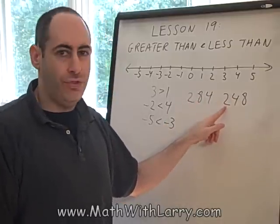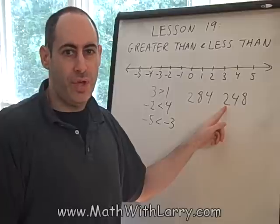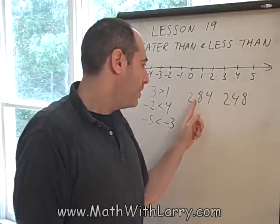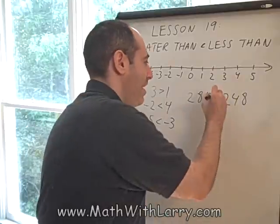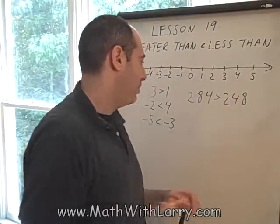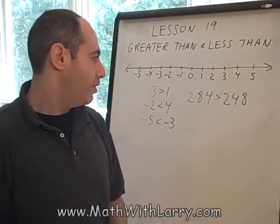Since they both started with a 2, they both had 200, so that was a tie. We had to keep going, and we saw that 8 tens beat out 4 tens as far as what was larger. So we can say 284 is greater than 248.